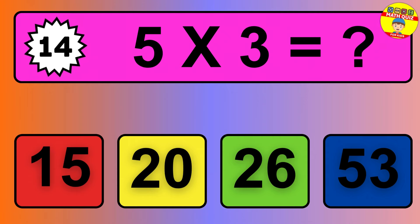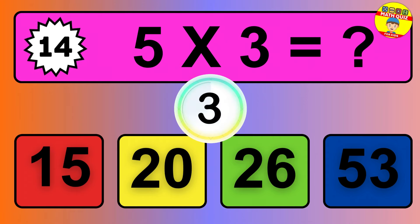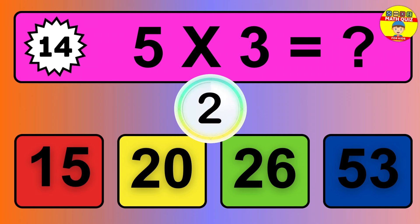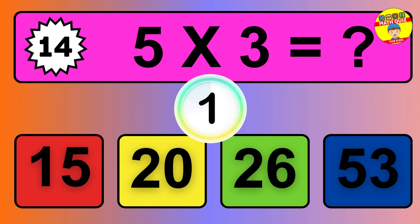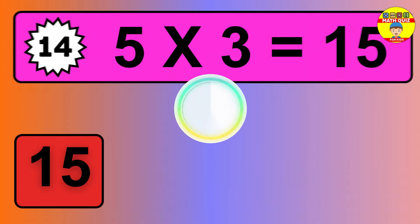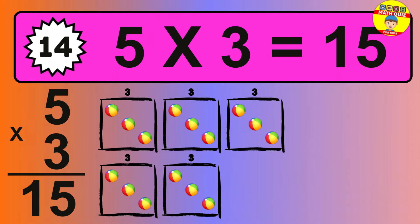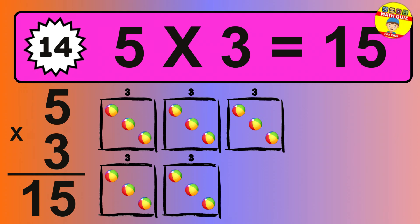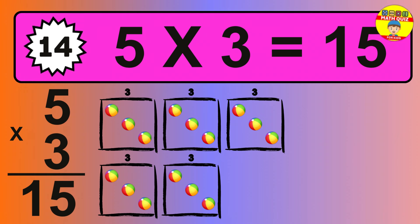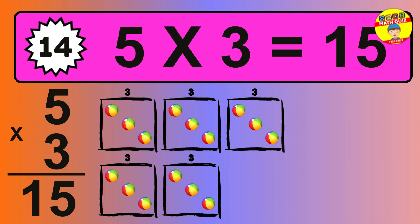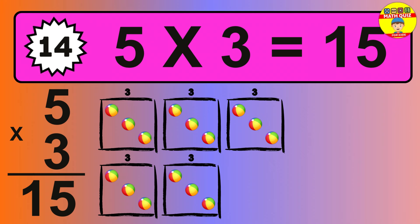Question 14. 5 times 3 equals what? The answer is 5 times 3 is 15. To calculate, we have 5 groups with 3 balls each one. So how many balls do we have? 15 balls.